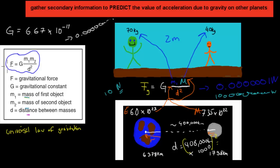This is what the universal law of gravitation talks about. The reason I mention all this is because it's the first point we need to know when it comes to this dot point, because it says: gather secondary information to predict the value of acceleration due to gravity on other planets. I'm going to show you how we can predict this value of acceleration on different planets using a couple of different formulas.